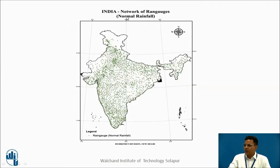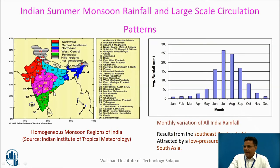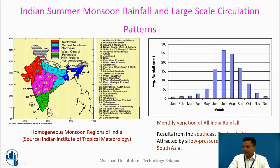India has a network of rain gauges. This is the IMD network where we measure rainfall continuously over a period of time. India is divided into regions: the Northwest region, the West Central region, the Peninsular region, the Central North East region, and the Northeast region shown in dark blue.